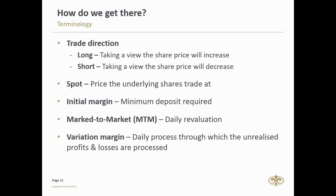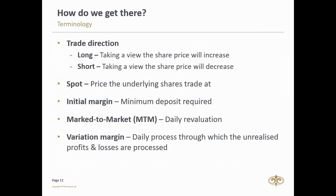When it comes to closing a position — going long, you just do the opposite; going short, you just do the opposite. With single stock futures, when it comes to expiry, the default is that PSG will automatically roll you over into the next contract — from the June contract into the September contract. There is a rolling position fee of 0.25% of the value of the transaction. With CFDs, there's more flexibility as there's no expiry, making it ideal for the position trader taking a longer view.